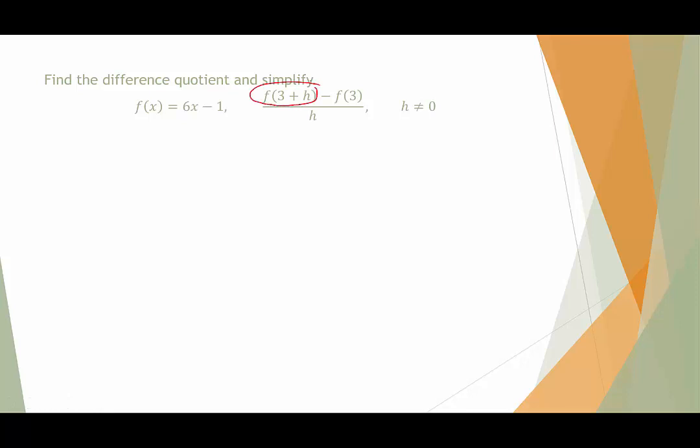First, we're going to look at just f(3+h). We'll plug 3 plus h into the function, simplify it. Then we'll go, so this is what we're going to do first. Second, we're going to look at f(3) and plug that in and see what we come up with. And then we're going to put it all back together in the fraction. So first we have f(3+h). That means anywhere I see an x, I'm going to replace it with 3 plus h. So because it's an expression with an addition sign, I need to put it in parentheses.